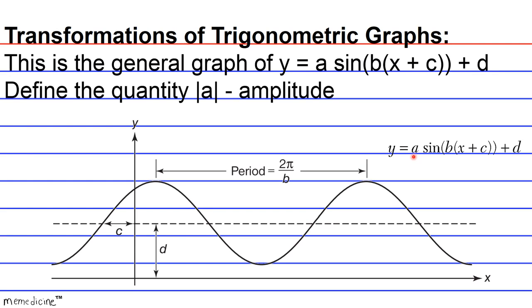Alright, so amplitude, or the absolute value of a, is going to be the distance, or half the distance rather, from the maximum value to the minimum value.